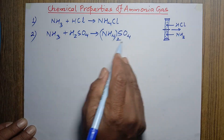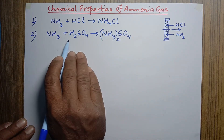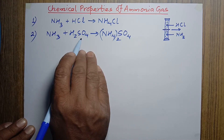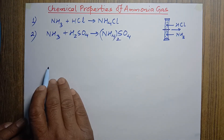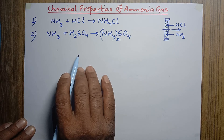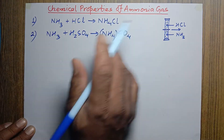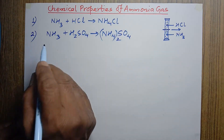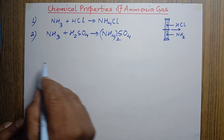We can give other examples also. Ammonia when it reacts with hydrochloric acid then it forms ammonium chloride. In the same way, with nitric acid it also forms a salt. This is another important chemical property of ammonia.